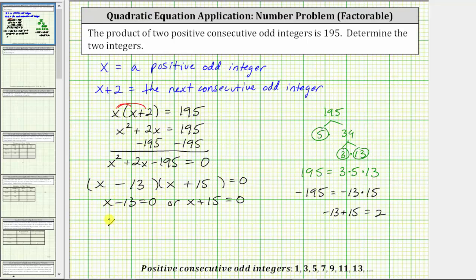Solving for x here, we add 13 to both sides, giving us x equals 13. Solving for x here, we subtract 15 on both sides, giving us x equals negative 15. But x cannot equal negative 15 because we are told we have two positive consecutive odd integers. Therefore, we can exclude x equals negative 15, and now we know the solution is x equals 13.